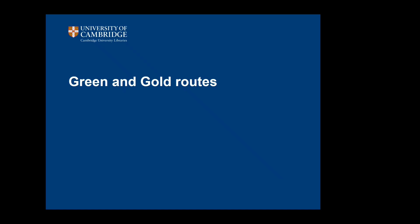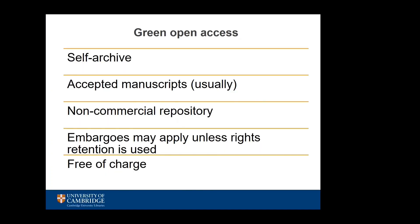Green and gold routes. Broadly speaking, there are two main types of open access, and I will look at them in more detail here. Green open access, also known as self-archiving.